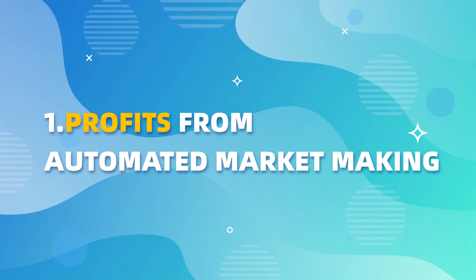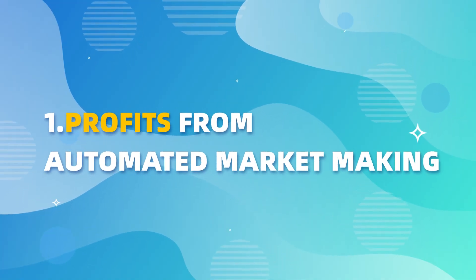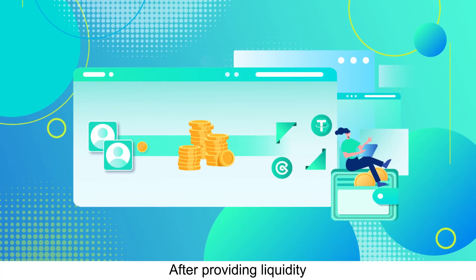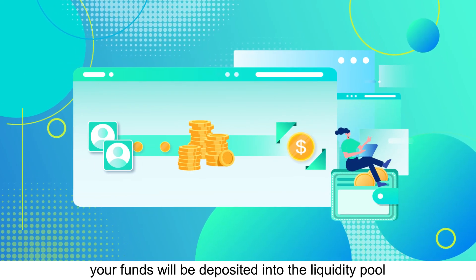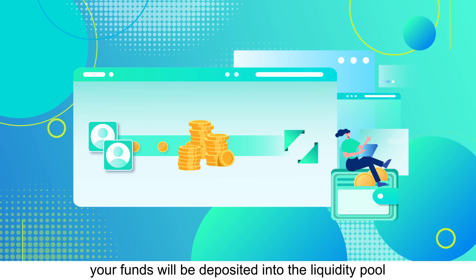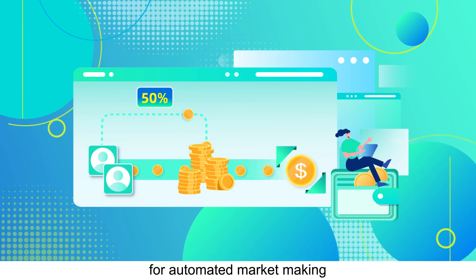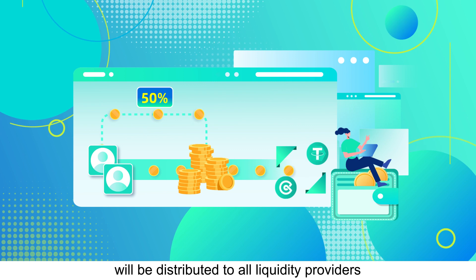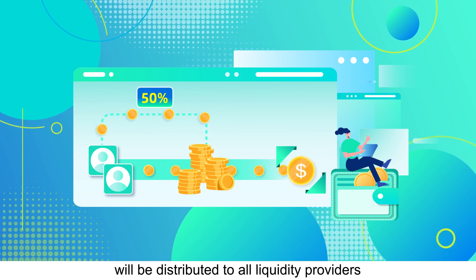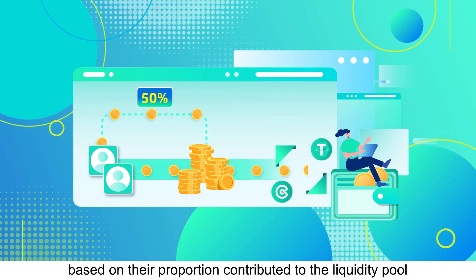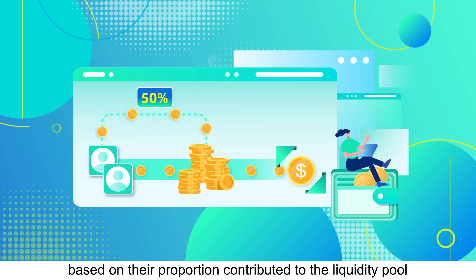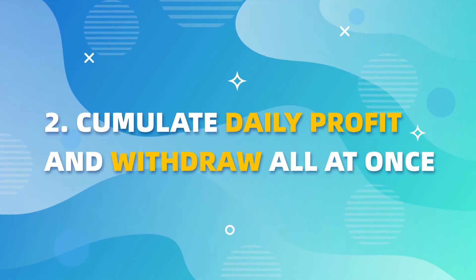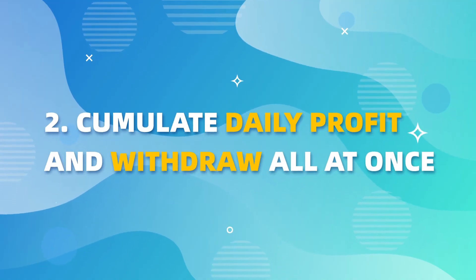One: profits from automated market making. After providing liquidity, your funds will be deposited into the liquidity pool for automated market making. 50% of the trading fees earned in this market will be distributed to all liquidity providers based on their proportion contributed to the liquidity pool.